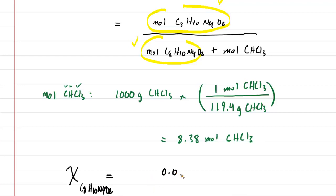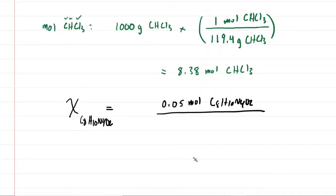We'll take the moles of the caffeine, 0.05 moles of caffeine. Divide that by the total moles. And the total moles will be the sum of the moles of caffeine and the moles of the chloroform that we just figured out, 8.38. Sorry if my handwriting is a little sloppy there. But here we go.